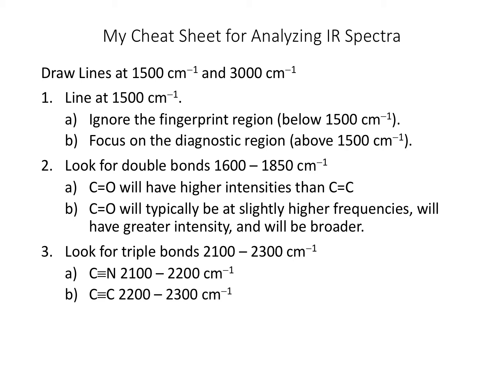The double bond region is between 1,600 and 1,800 wavenumbers — this is where we'll see carbon-carbon and carbon-oxygen double bonds. Carbon-oxygen double bonds have higher intensities and are generally at higher frequencies and broader. We look for triple bonds between 2,100 and 2,300 wavenumbers; those are carbon-carbon and carbon-nitrogen triple bonds, and they look pretty similar, so we often need additional information like the molecular formula to distinguish them.